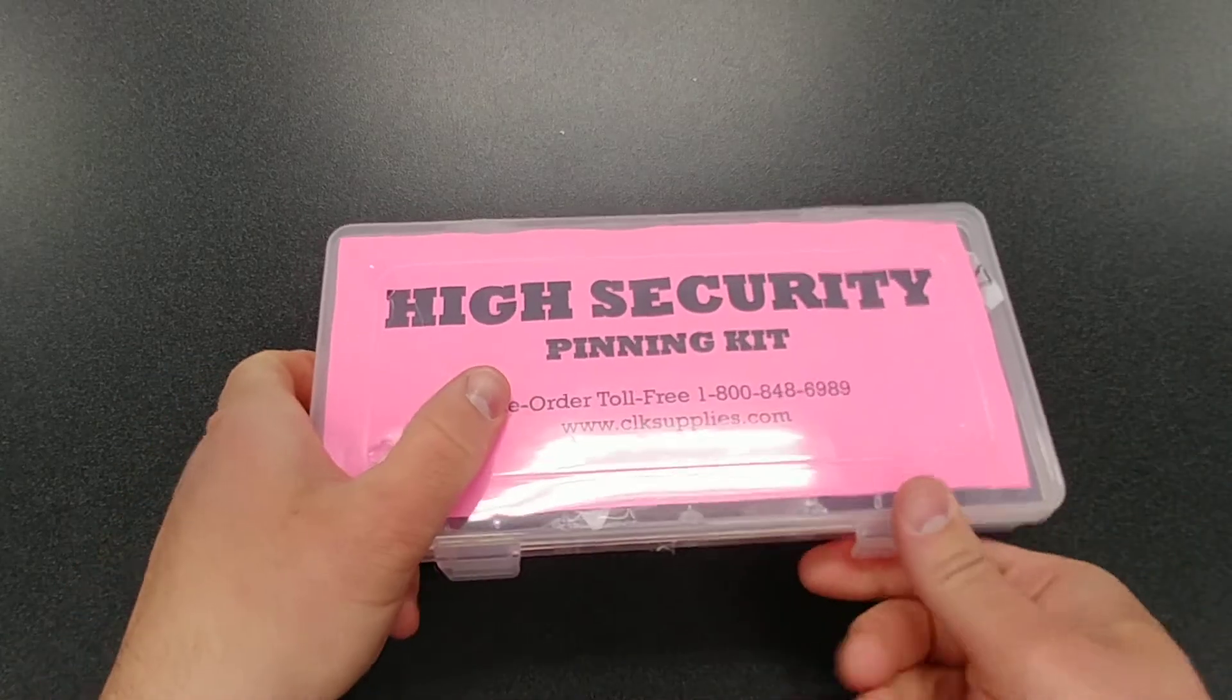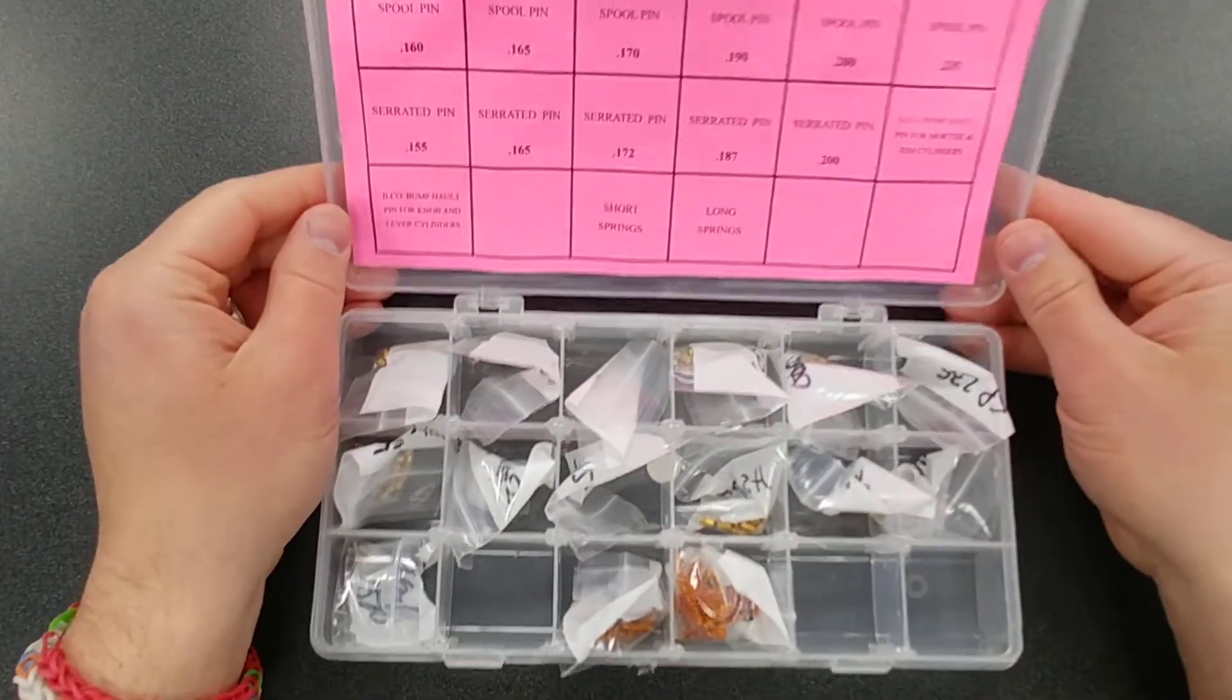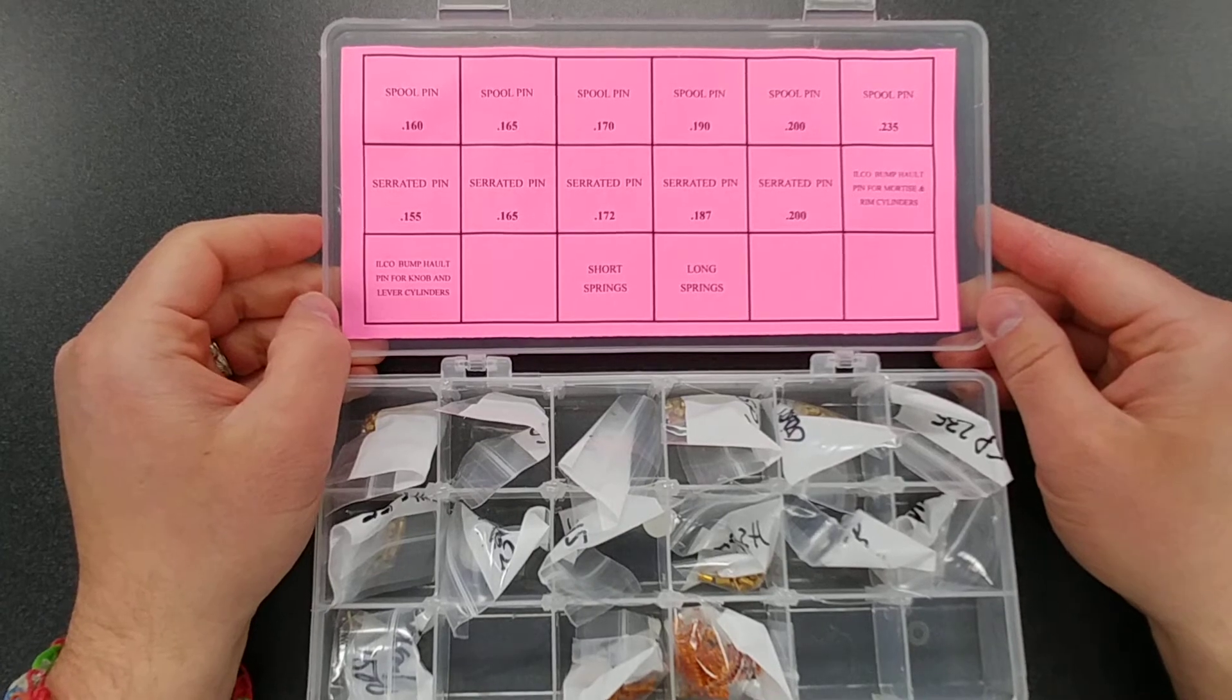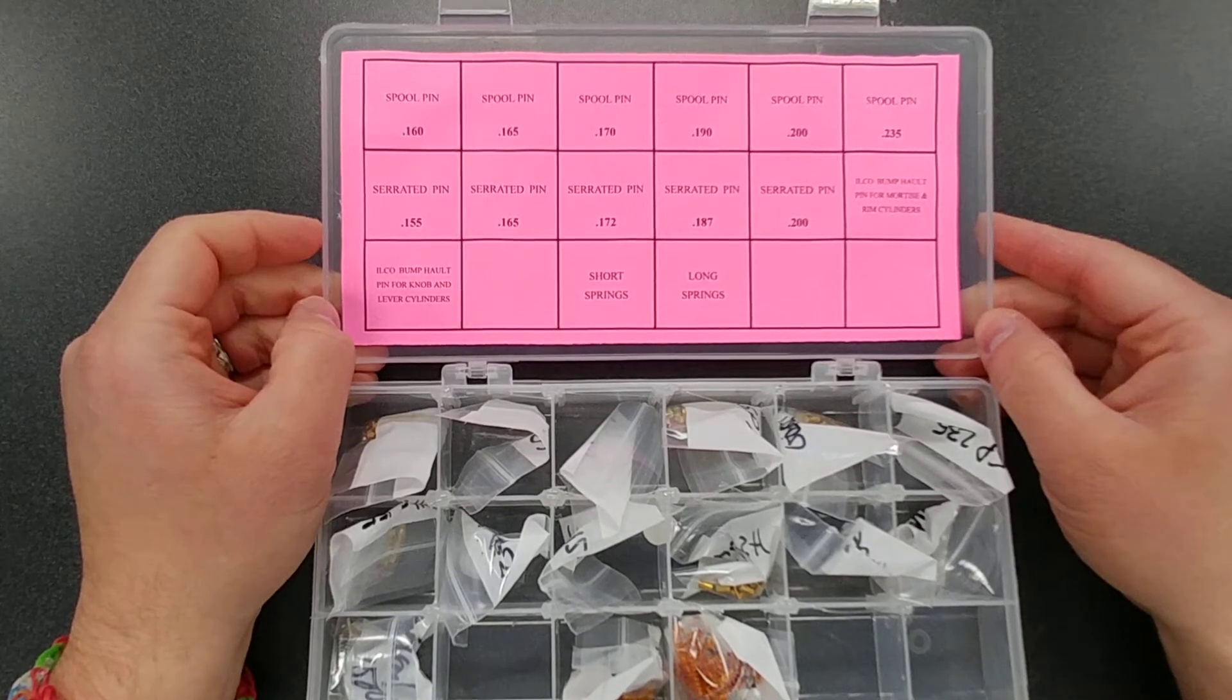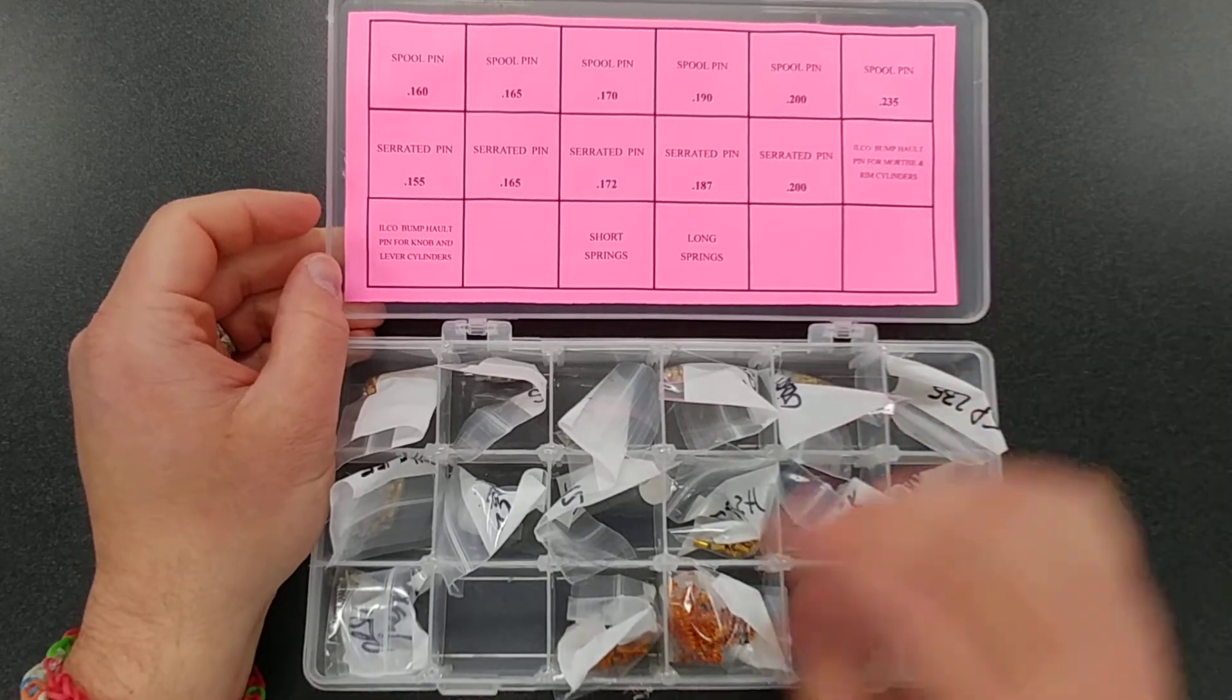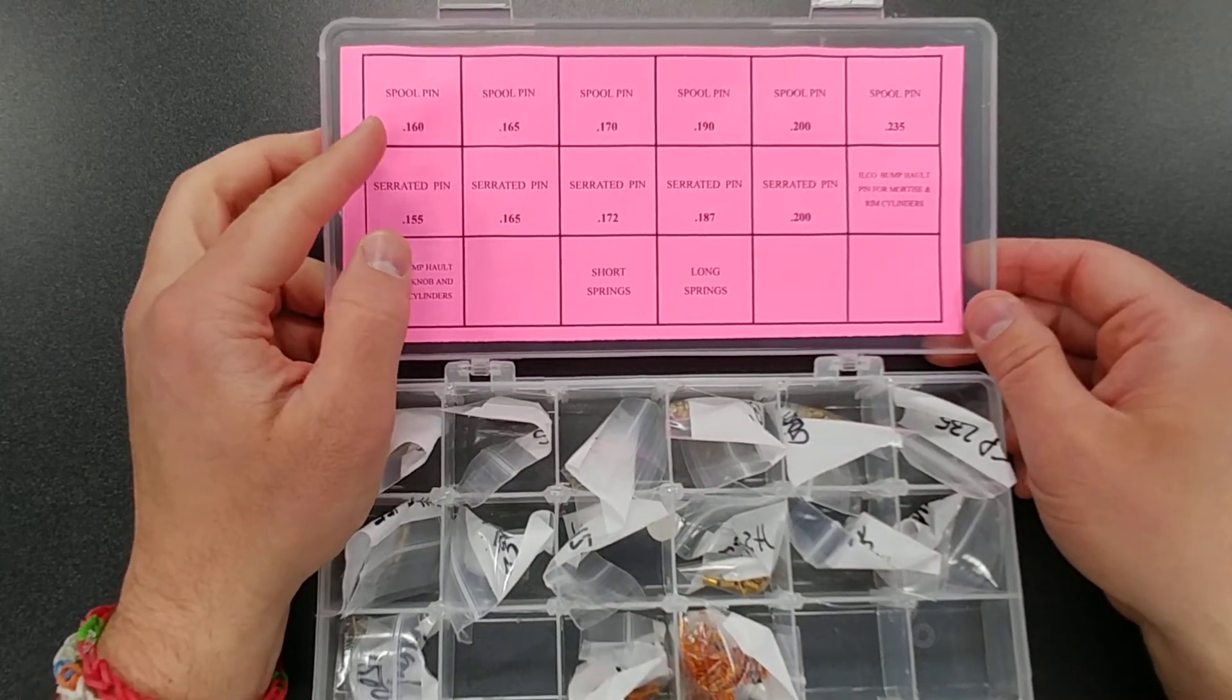Alright, so it's going to come with 25 pieces each of the spool and serrated pins, and then five each of a couple different bump halt pins by Ilko, and then 50 each of two different sizes of springs. But as you can see up top here, it comes with spool pins.